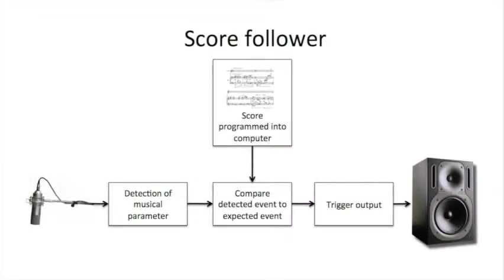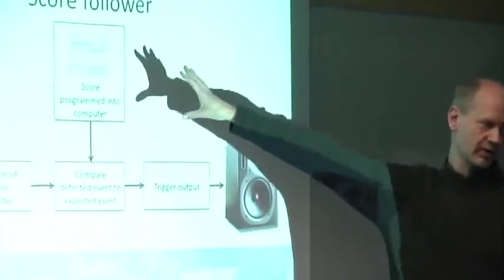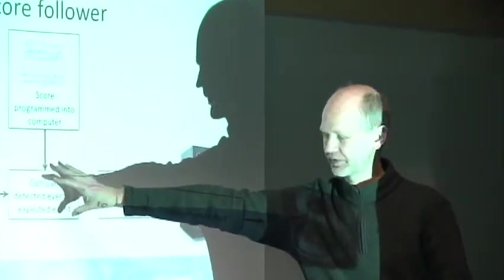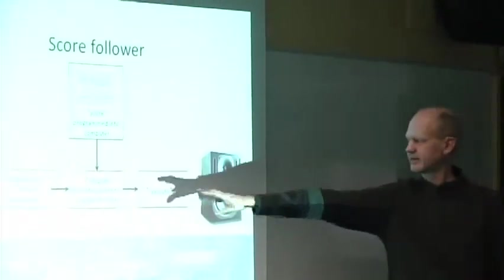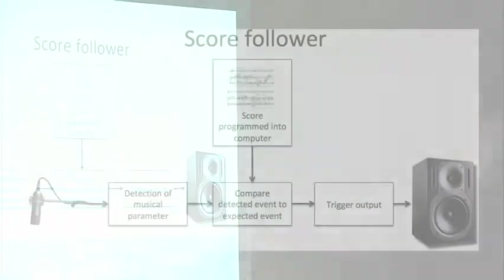I'm going to condense my description on the piece a little bit. This is just the structure of the score follower. You have to detect what's coming into the microphone. Then you have a score that's stored in the computer, and then you compare this score, what is expected to happen, with what actually happens. Then, depending on that comparison, you trigger an output somehow. That's the score follower.